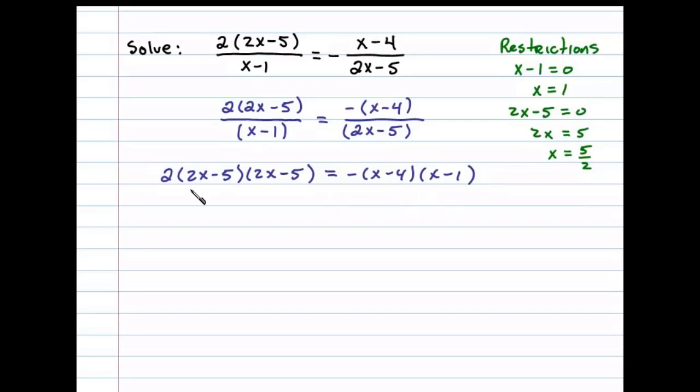Let's begin by distributing. That'll leave us with 2 times 4x squared minus 10x minus 10x plus 25 equals negative x squared minus x minus 4x plus 4. Before I distribute, let me go ahead and add these like terms, so we have 2 times 4x squared minus 20x plus 25 equals negative x squared minus 5x plus 4.